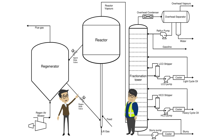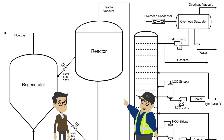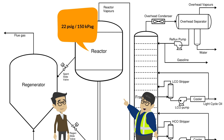What about the reactor? The reactor operates at a pressure of around 22 psig, or 150 kPaG. The temperature of the vapors leaving the reactor is around 510 degrees Celsius.